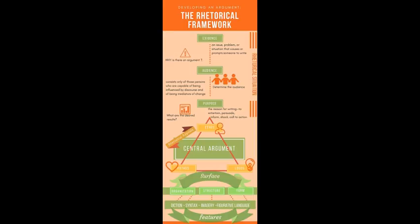Students often particularly confuse ethos and pathos, so using the icons here was incredibly important. For ethos, I used a little figure of a person to help them remember that this is appealing to an author's credibility. For pathos, I used a little heart to remind them that this is an appeal to emotions. And for logos, I used a little light bulb because I wanted them to remember that this was logic or logical thinking. These are the three appeals that work into the central argument as they're writing.